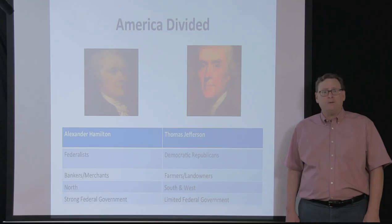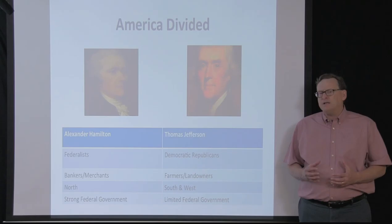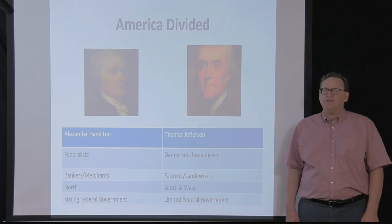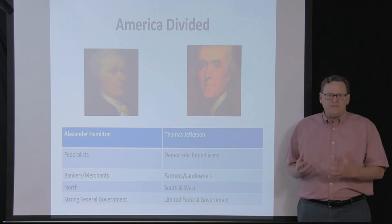On the other side was Thomas Jefferson, who led what were then called the Republican Democrats. They were different from the Republicans and Democrats today, but they believed in a relatively weak central government that was only there for defending the nation against foreign intruders and a few other limited powers. They wanted the country governed by states and individuals governing themselves through voluntary association. They came mostly from the South and the West, and were mostly farmers and landowners that wanted a weaker central government.